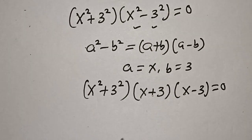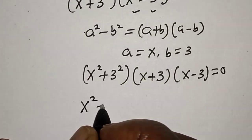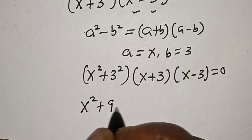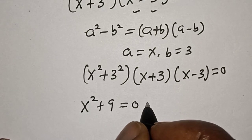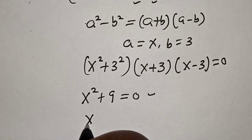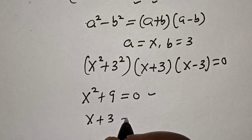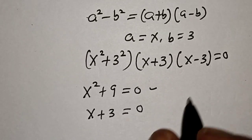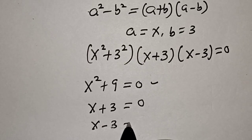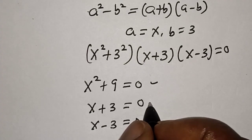There are three cases here. The first case: x squared plus 9 is equal to 0. The second case: x plus 3 is equal to 0. The third case: x minus 3 is equal to 0.